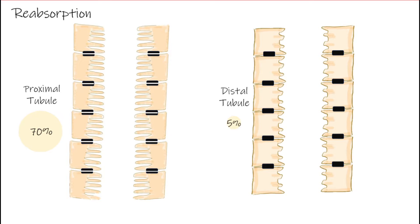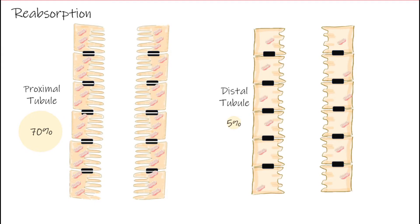Recall that transcellular transport requires active transport across the basolateral membrane, and one of the major mechanisms is the sodium-potassium pump. To make that work, lots of ATP is required. So proximal tubular cells have many more mitochondria compared to distal tubular cells. These structural differences correlate with the functional differences in different portions of the nephron.